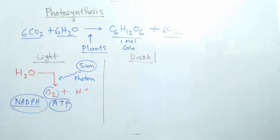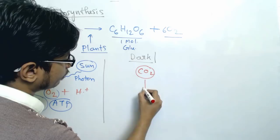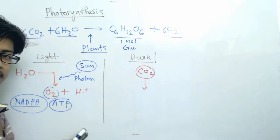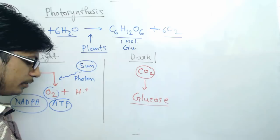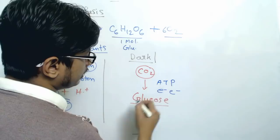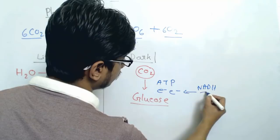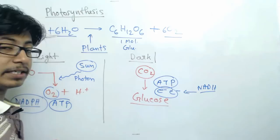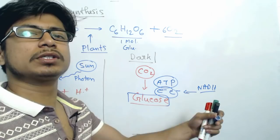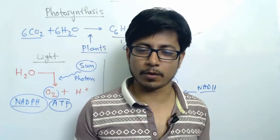Once that is done, the second part of the reaction begins — the dark reaction or Calvin cycle. It initiates with carbon dioxide as a raw material. Carbon dioxide interacts with five-carbon molecules present inside the plant cell, and they ultimately convert it into glucose. For this conversion they need ATP and electrons donated by NADPH. Once glucose is produced, it is transported across the whole body of the plant and stored in different forms like starch.